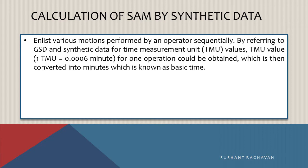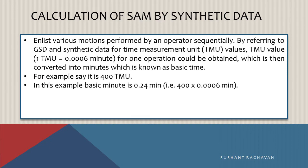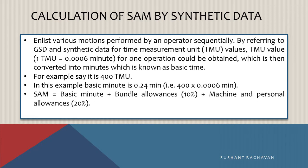TMU value: 1 TMU equals 0.0006 minutes. For one operation, the TMU value is obtained and then converted into minutes, which is known as basic time. For example, say it is 400 TMU. In this example, basic time is 0.24 minutes (i.e., 400 × 0.0006 minutes). SAM equals basic minute plus bundle allowances (10%) plus machine and personal allowances (20%). Therefore, SAM equals 0.24 + 0.024 + 0.048 = 0.312 minutes.